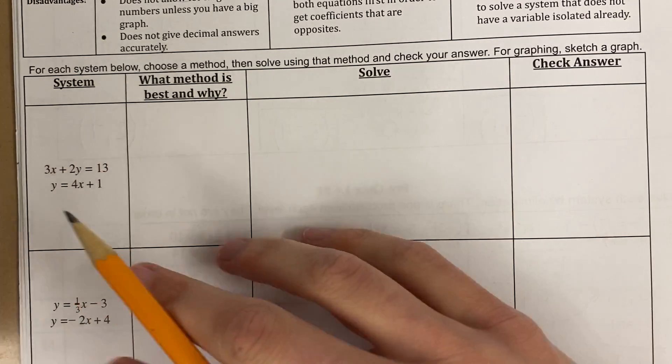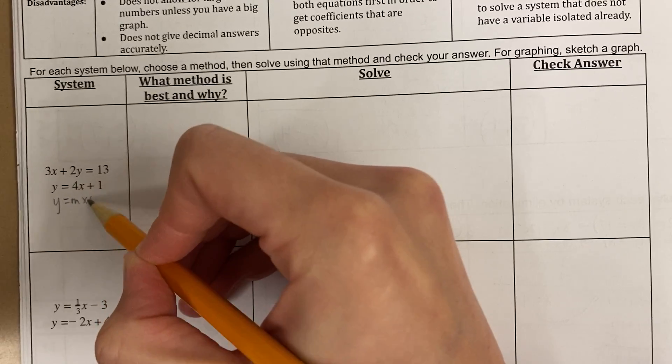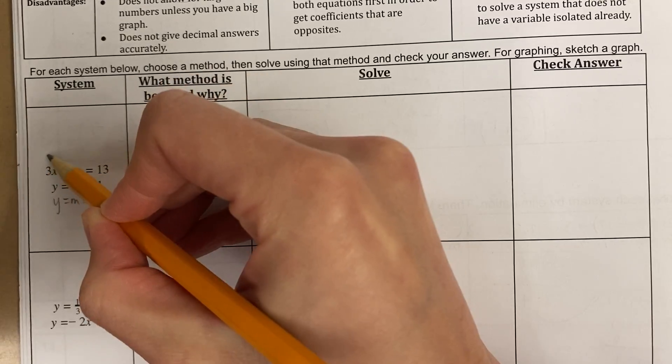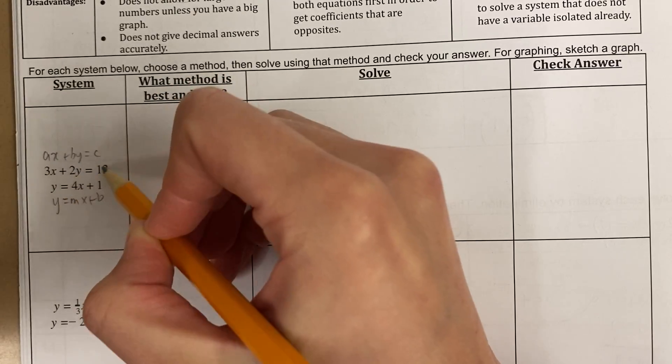Okay, so for this first system, let's go ahead and observe. I noticed that there's one equation that's in slope-intercept form, y equals mx plus b, and there's one equation that's in standard form, where a number times x plus a number times y equals a number.